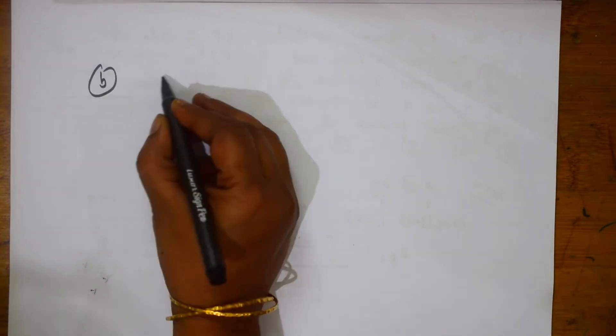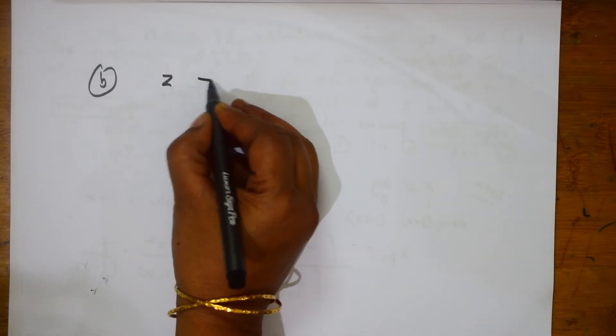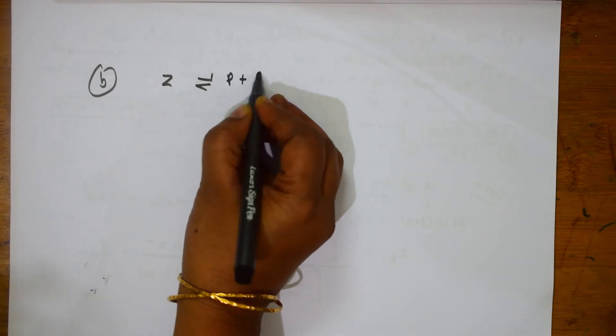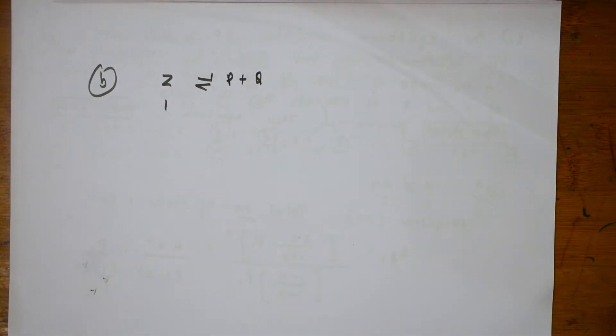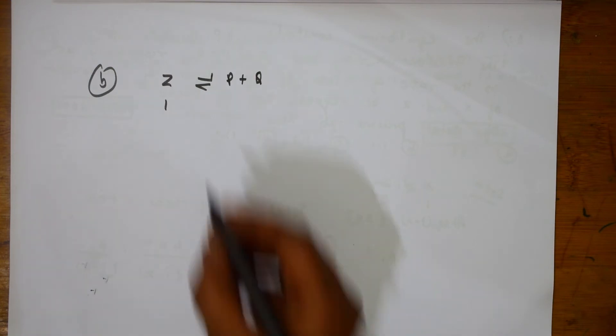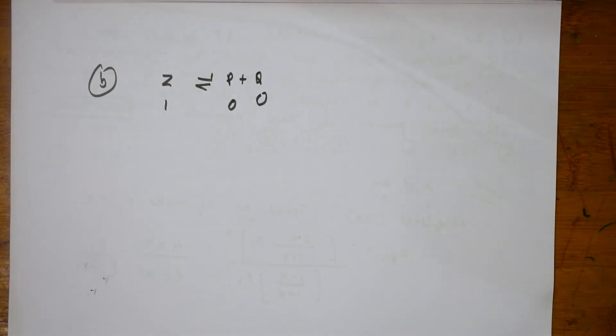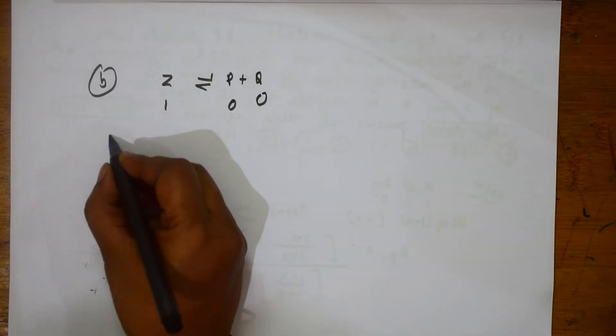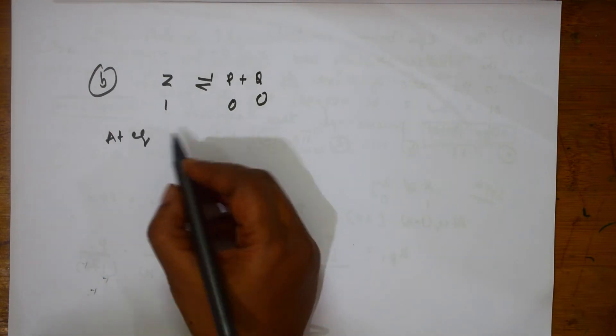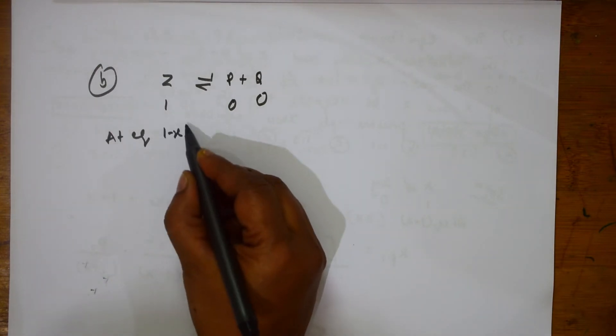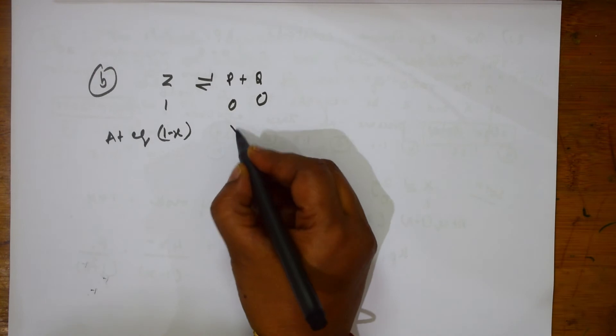Let us do the next one. What is the second one they said? They said the second part Z is in equilibrium with P plus Q. Again, initially the concentration of Z is 1. The concentration of P and Q are 0 and 0. Now, at equilibrium what will happen is this becomes 1 minus X and this becomes X and X.